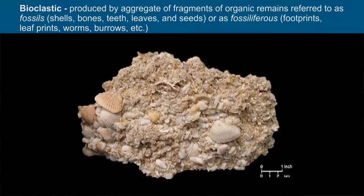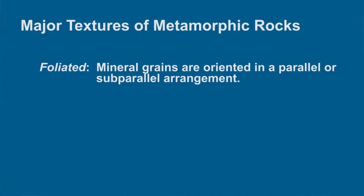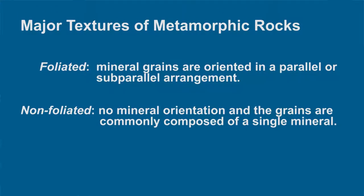Then is bioclastic texture, produced by an aggregate of fragments of organic remains referred to as fossils — such as shells, bones, teeth, leaves, and seeds — or as fossiliferous traces such as footprints, leaf prints, worm burrows, etc. Major textures for metamorphic rocks include foliated, in which mineral grains are oriented in a parallel or subparallel arrangement, and non-foliated, in which mineral orientation is absent and grains are commonly composed of a single mineral.